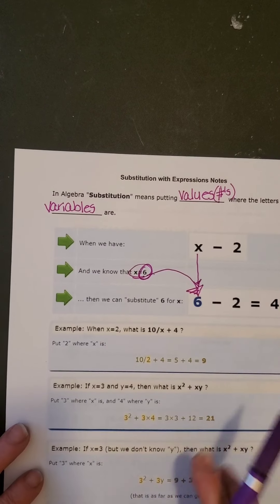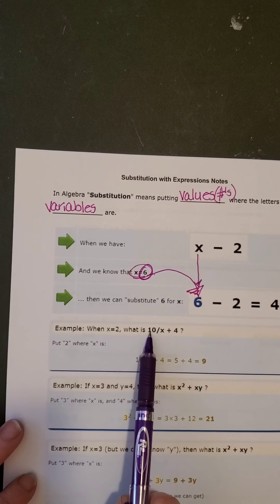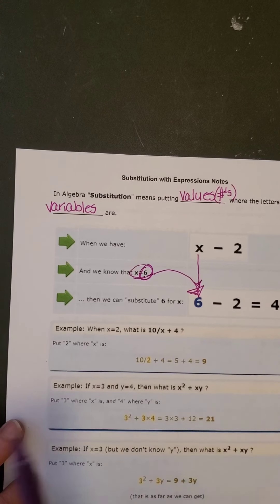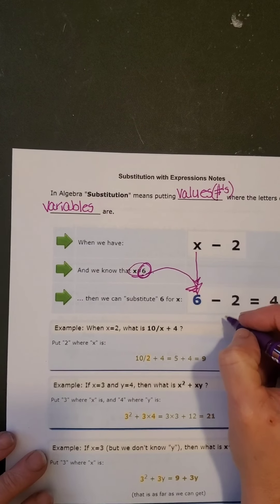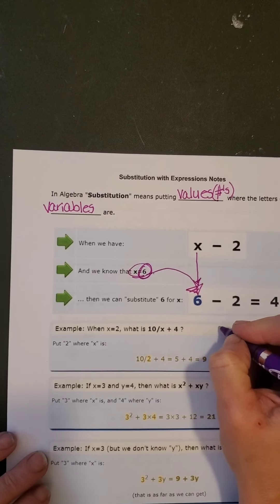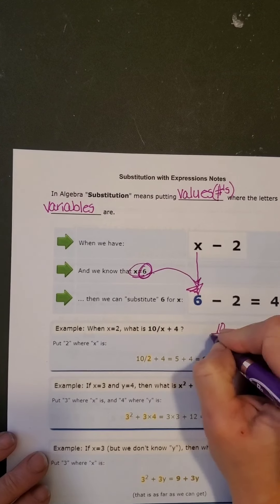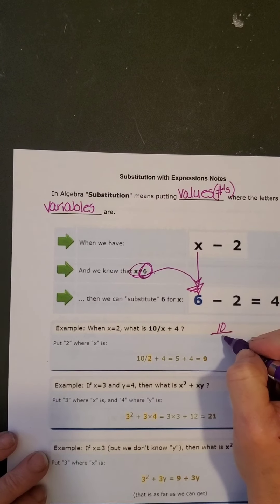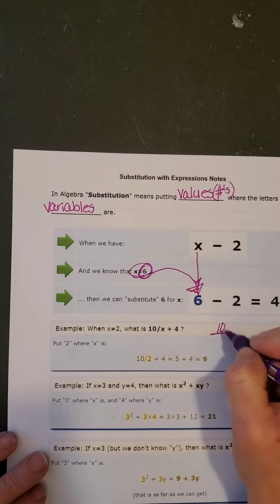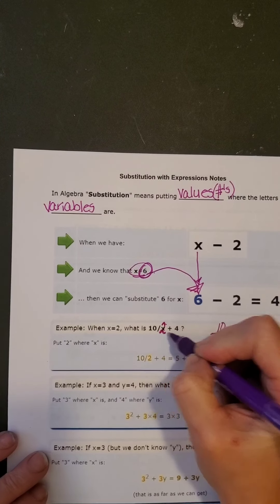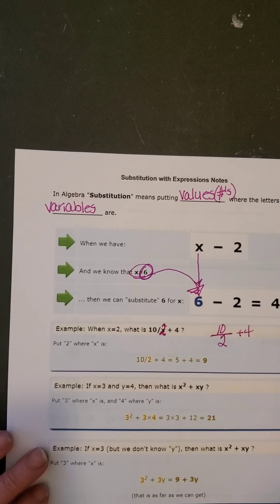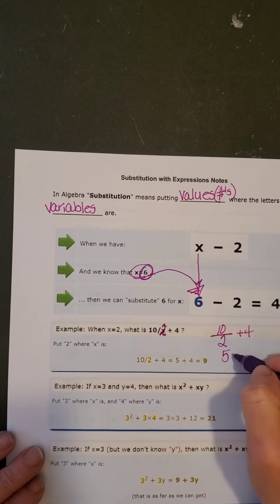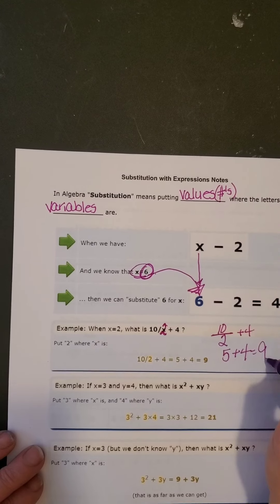So here is an example. When x equals 2, what is 10 divided by x plus 4? Well, I am going to come over here and do it. So when x equals 2, what is 10, and we know that we do our division like this, divided by x is equal to 2. You literally could come right here and put a 2 on top of that x. 10 plus 4. So 10 divided by 2 is 5, plus 4 is 9.